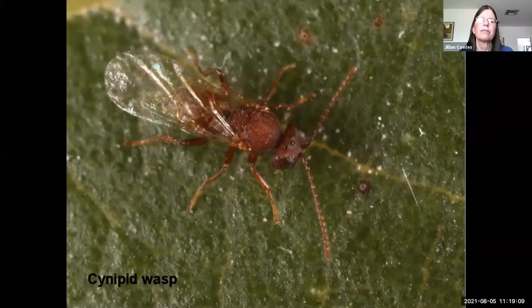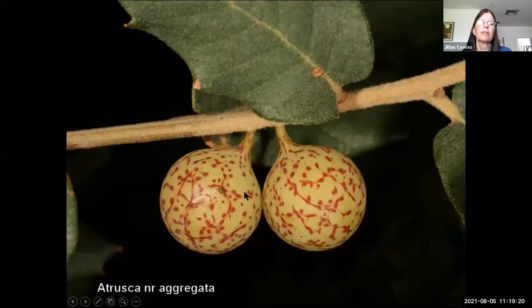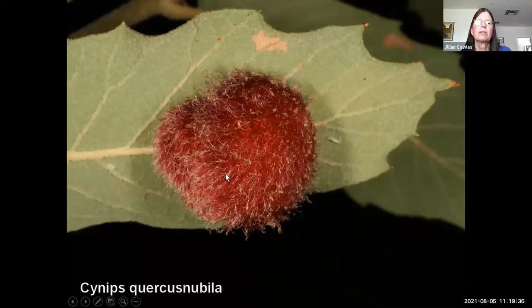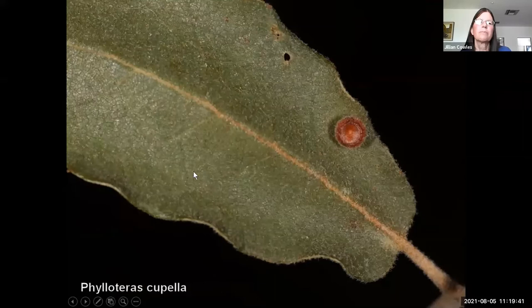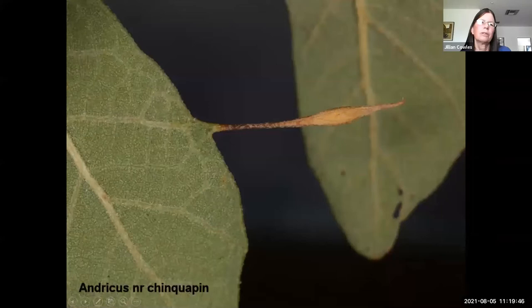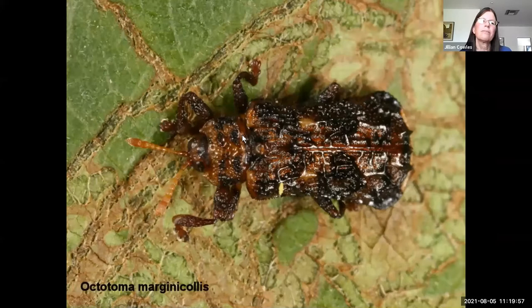Cynipid wasps are tiny — only about three millimeters long and very nondescript — but they form a spectacular array of different galls. Each cynipid wasp species forms its own gall. On oak trees in southern Arizona you can have fuzzy ones, urn-shaped galls, and even spindle-shaped galls. Another group of overlooked herbivores are leaf miners. Here's an adult chrysomelid beetle whose larvae tunnel within the tissues of leaves, feeding inside.